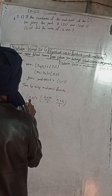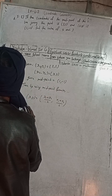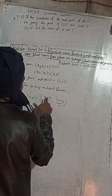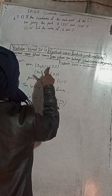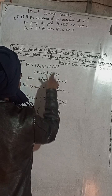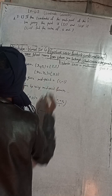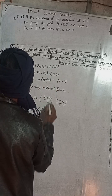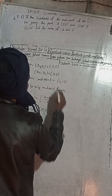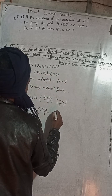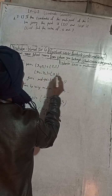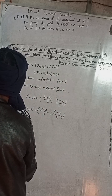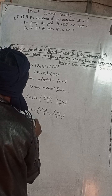This midpoint is given as 1 comma minus 1. So this implies 1 comma minus 1 is equal to: x1 is 3 and x2 is x, so 3 plus x by 2, comma y1 is 5 and y2 is y, so 5 plus y by 2.